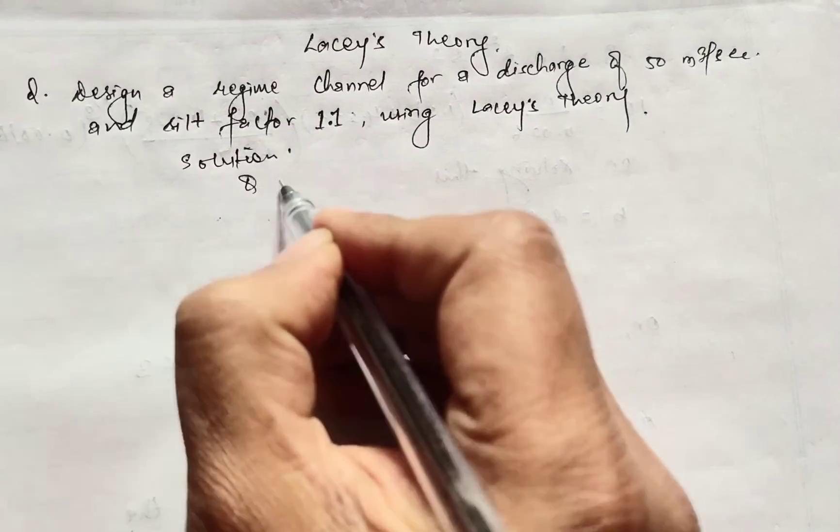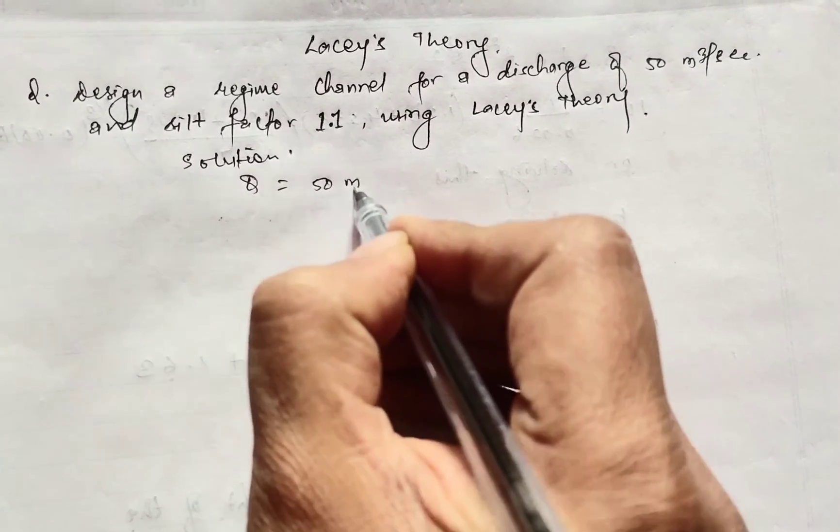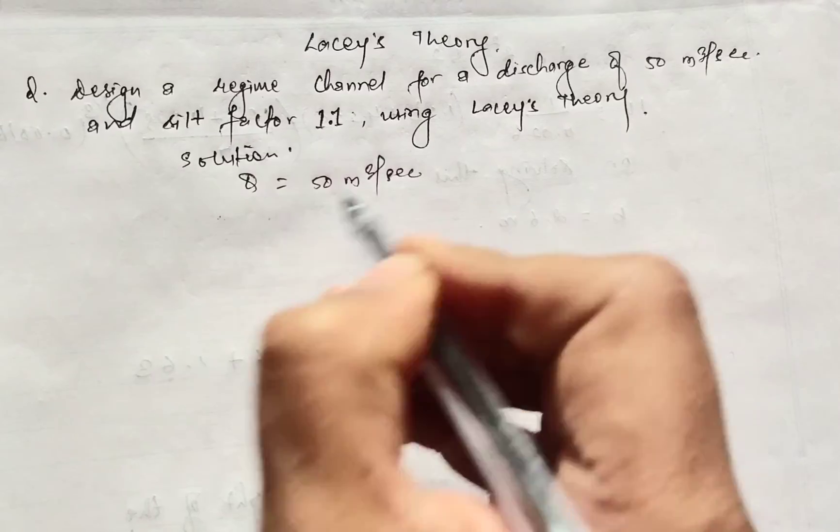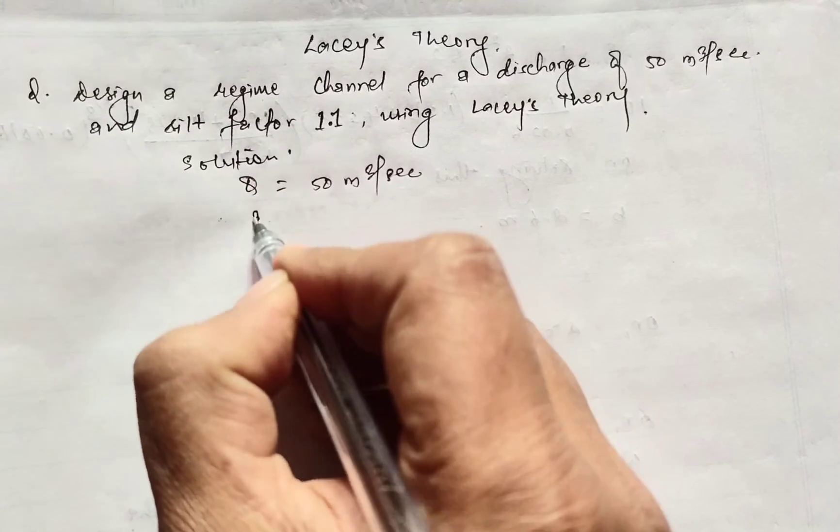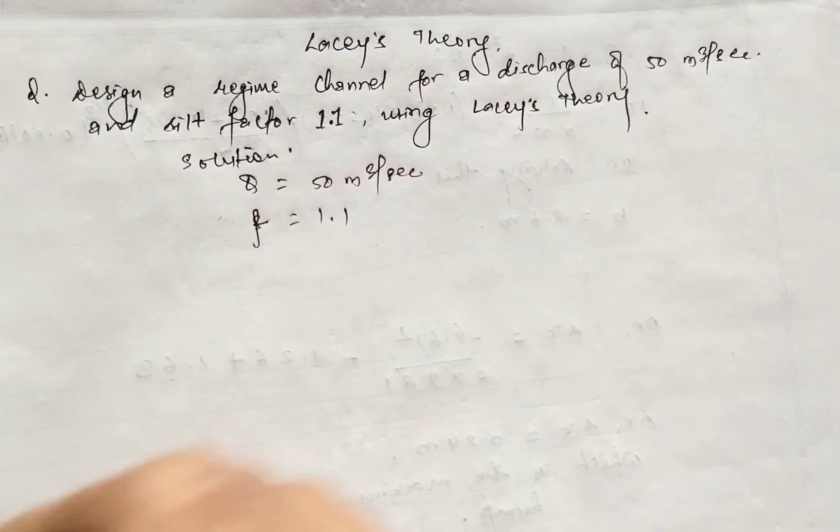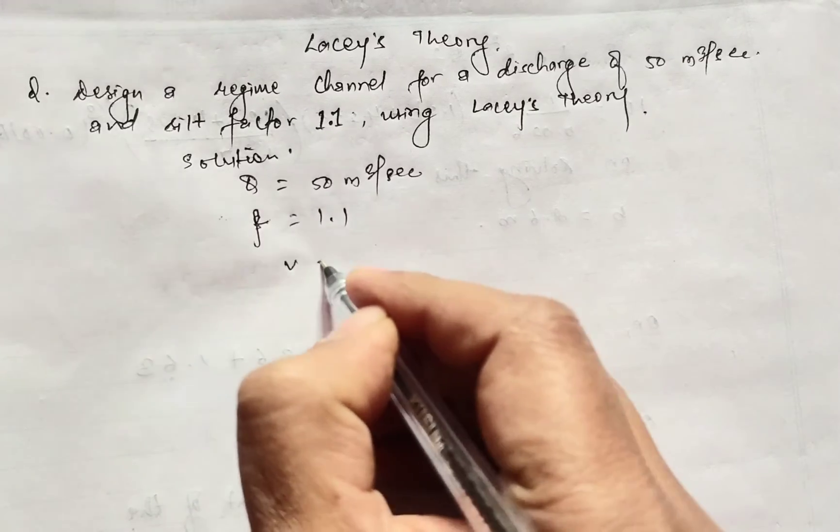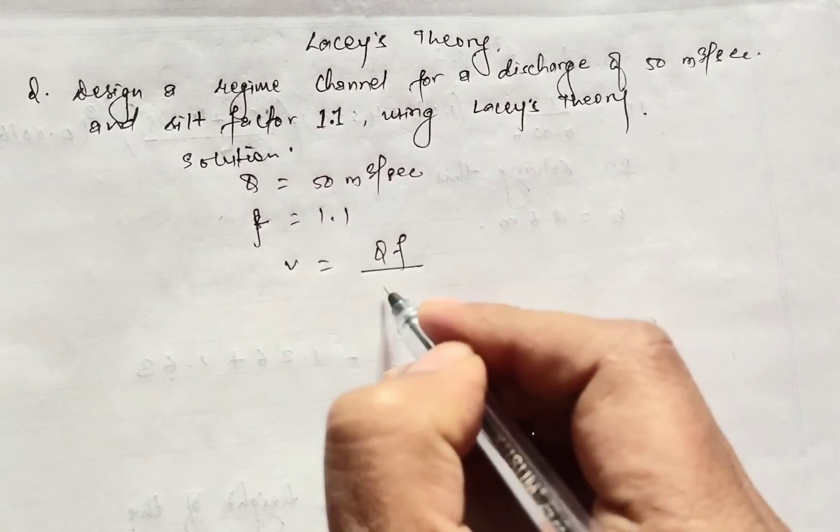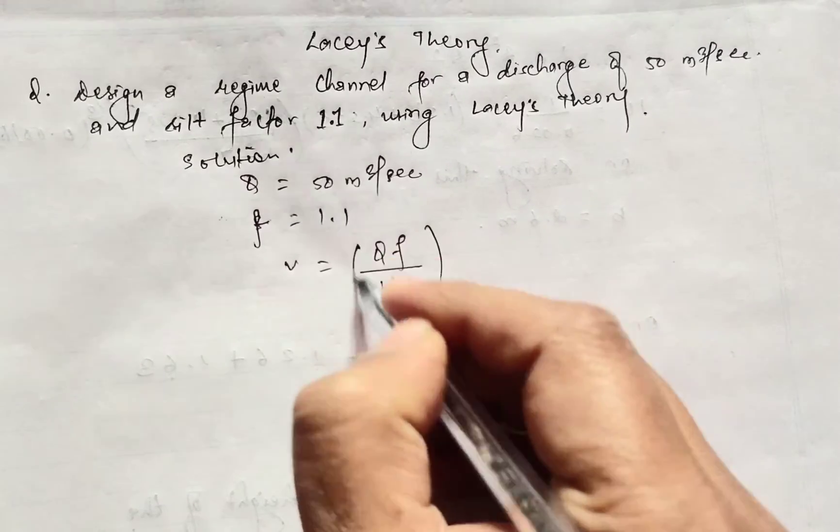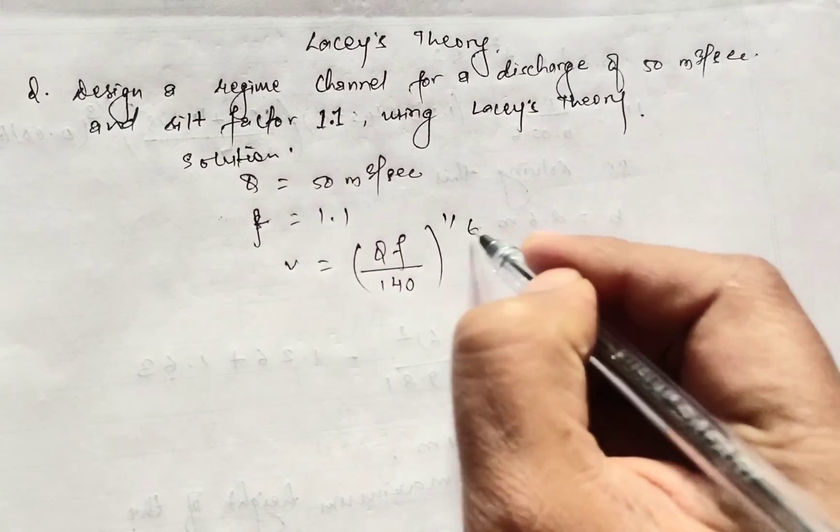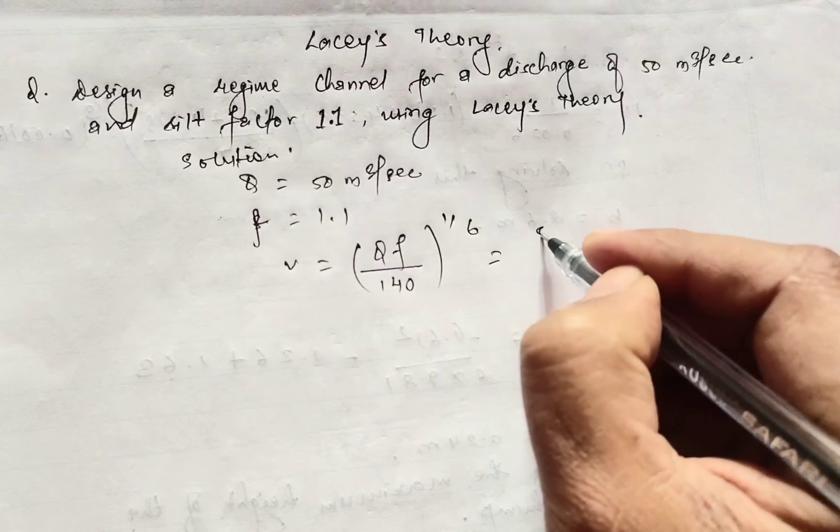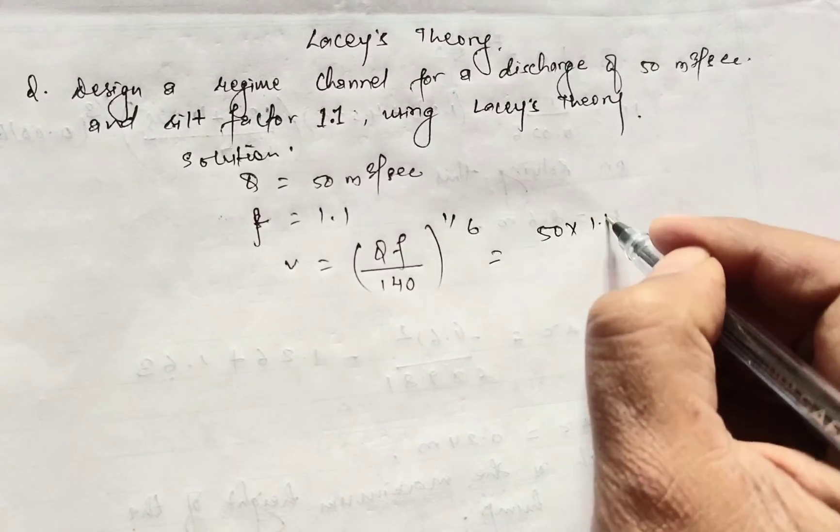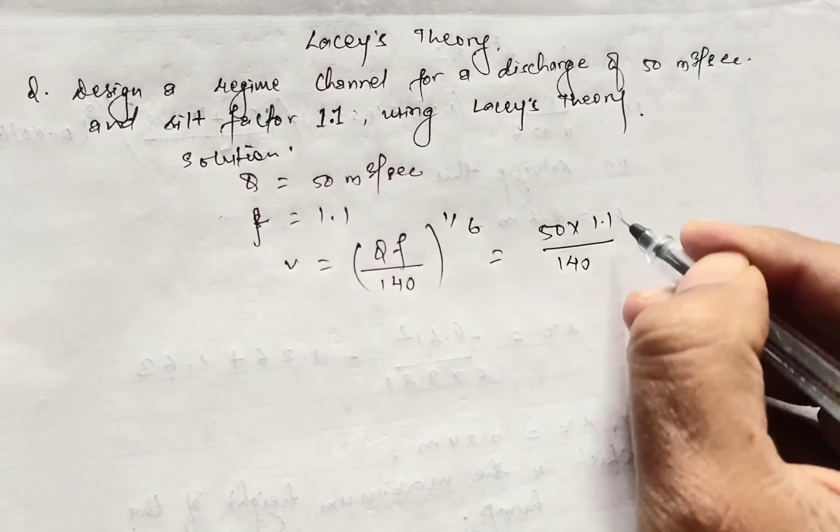The given data is Q equals 50 meter cube per second and shield factor F equals 1.1. So first we'll calculate the velocity using formula V equals (Q F divided by 140) to the power 1 by 6. The value of Q is 50, shield factor 1.1 divided by 140 to the power 0.6.